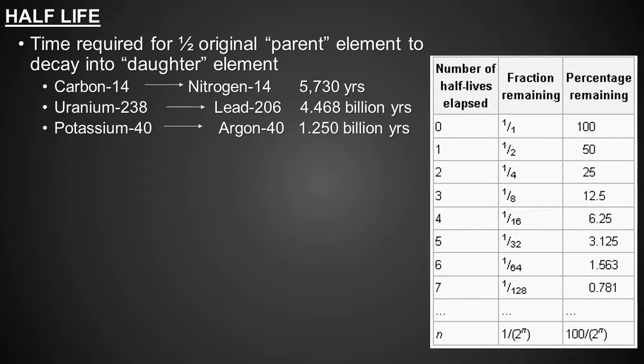The table at the right lists the percentage of parent isotopes remaining after different numbers of half-lives. After seven half-lives, there is very little of the parent isotope remaining, and it may be difficult to measure. Therefore, isotopes with shorter half-lives are only useful for younger geologic materials, where isotopes with longer half-lives are useful for geological processes and units that span much further into the past.